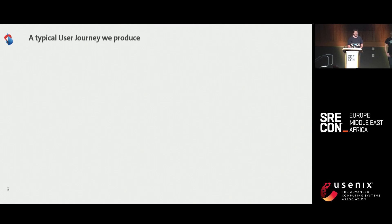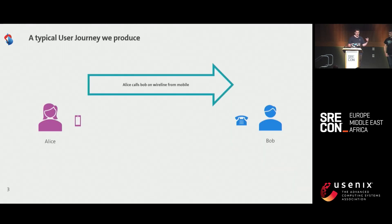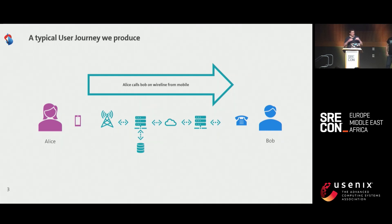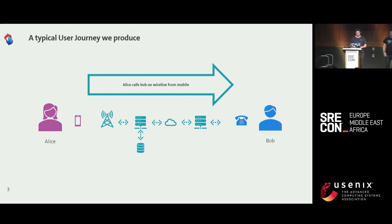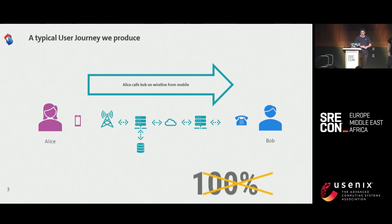We are at SREcon, so let's discuss which kind of user journey we typically produce as Swisscom. Let's take a simple example: Alice takes her smartphone and wants to call Bob on his wireline number. The user journey is Alice calling from mobile to fixed. A service like that, we fully manage — all the tech stack, all the workload, all the connectivity is done internally. It's far more complicated than that, going over tens if not hundreds of sub-services and teams. We all know 100% is a front target, and this is fully accepted for such a user journey.